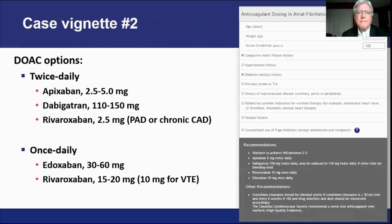We have twice-daily options with apixaban and dabigatran, and also with rivaroxaban for patients receiving the low-dose regimen in combination with an antiplatelet drug for peripheral arterial disease or chronic coronary artery disease. We also have a once-daily option with either edoxaban or rivaroxaban, and a lower-dose rivaroxaban option for patients with venous thromboembolism. There are four different DOACs with different dose regimens that should be individualized based on patient characteristics including renal function and age.